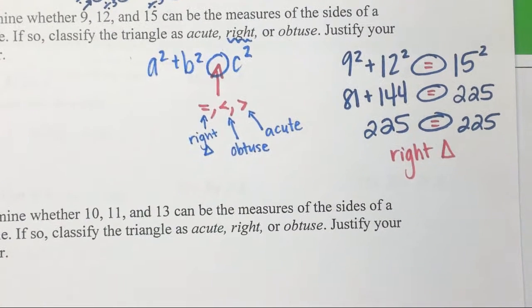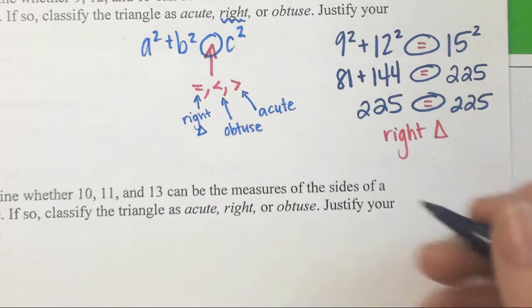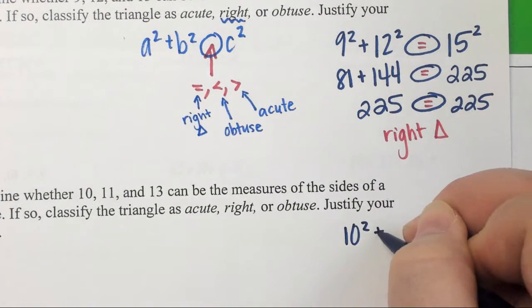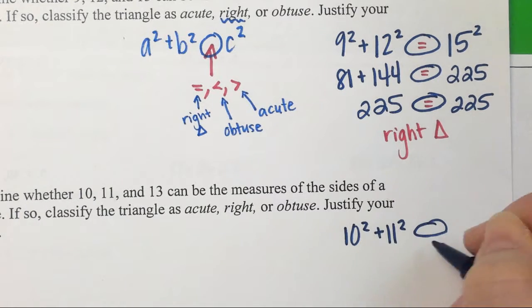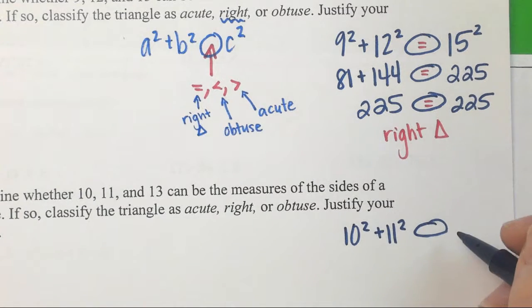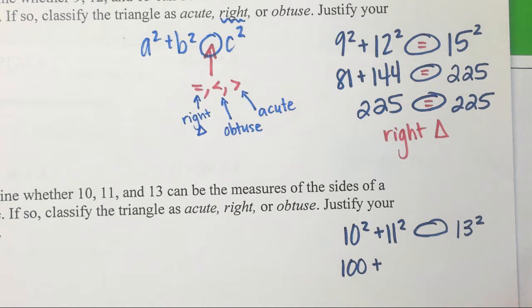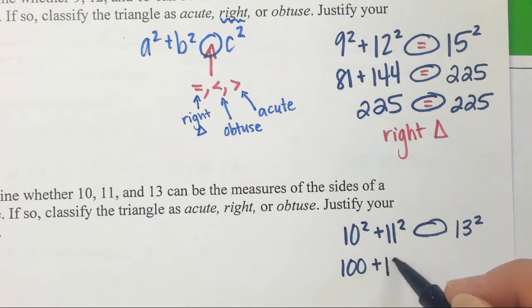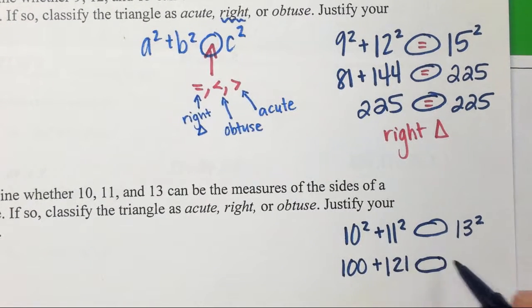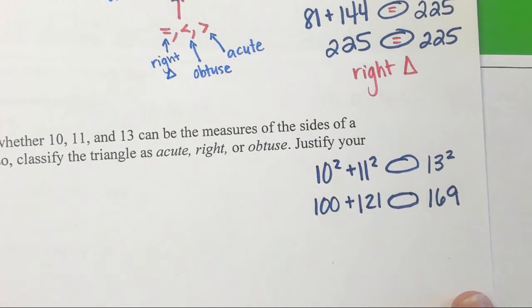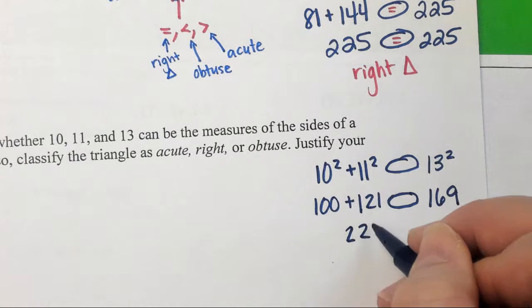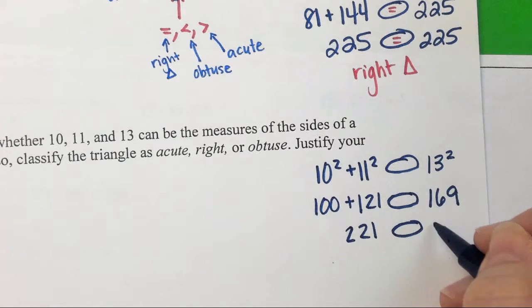10, 11, 13 is not a triple I've learned. So, let's see. 10 squared plus 11 squared. I'm going to put my symbol. I'm not sure what's going to go in my circle yet. Does that equal 13 squared? 10 squared is 100. 11 squared is 121. 13 squared, I think, is 169. Someone should probably check my math today. You know if I'm going to make a mistake, it's going to be first period. 221 and 169.